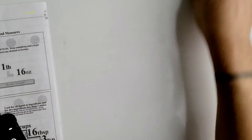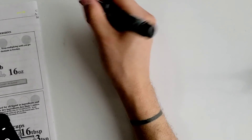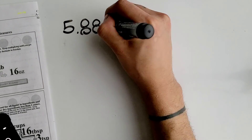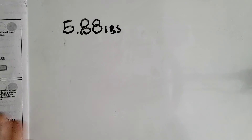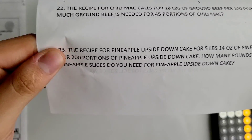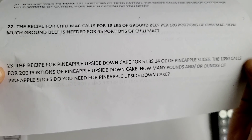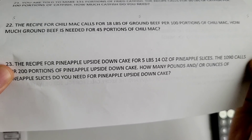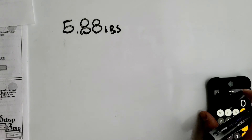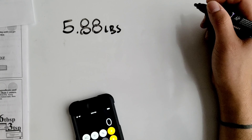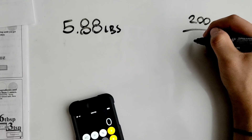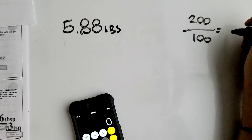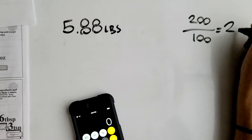The next step is to figure out what our working factor is. We have 5.88 pounds. The recipe calls for 200 portions of pineapple upside down cake, so 200 is our portions to prepare. To find the working factor, we divide our portions to prepare — 200 — by 100, which gives us a working factor of 2.